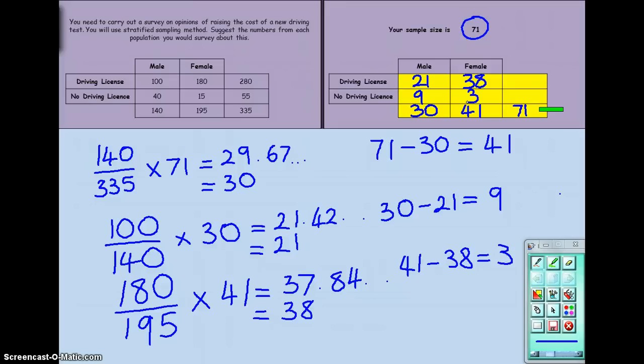Just to complete off the question, we're going to complete the totals for the rows. 21 plus 38 gives me 59. So, in total, I'm going to have 59 people who I sample with a driving licence. And those who do not, 9 plus 3 gives me 12. And a good way of just double checking that you've done everything correctly. Does 59 plus 12 give me 71? Yes, it does. And that is the basis of stratified sampling techniques.